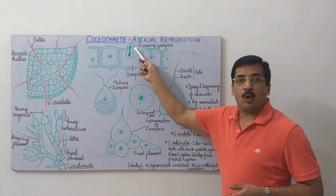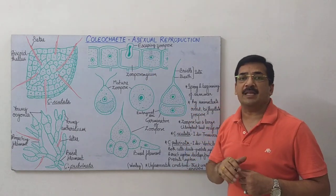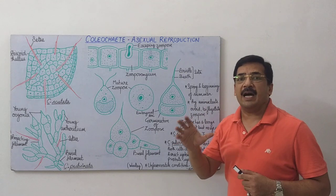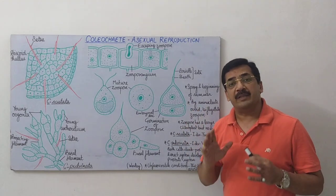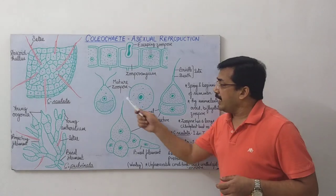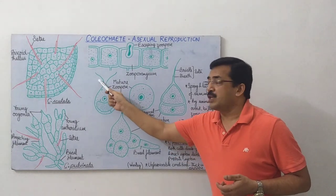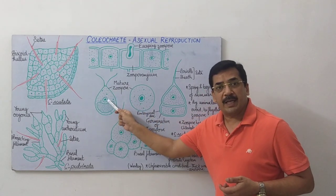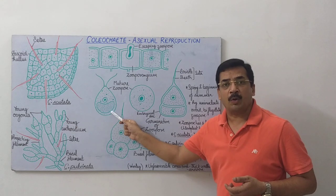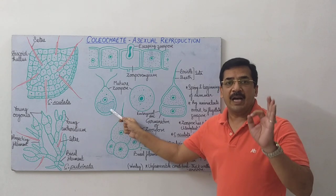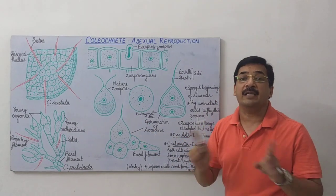Cell mein present ek pore ke madhyam se yeh zoospore bahar aata hai. Bahar aane ke baad yeh zoospore kuch samay paani mein tairta rehta hai. Yeh zoospore ovoid hota hai, biflagellate hota hai, uninucleate hota hai, aur isme ek single parietal chloroplast paaya jata hai. Yahan main clear kar dun ki yahaan eye spot nahi hota hai.